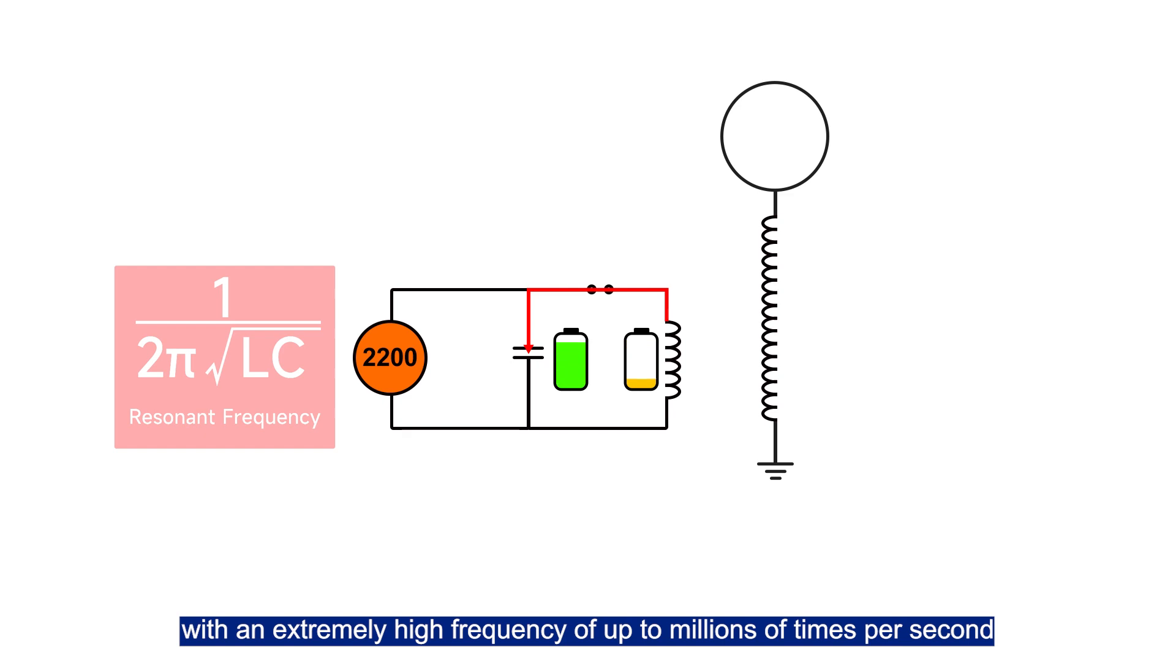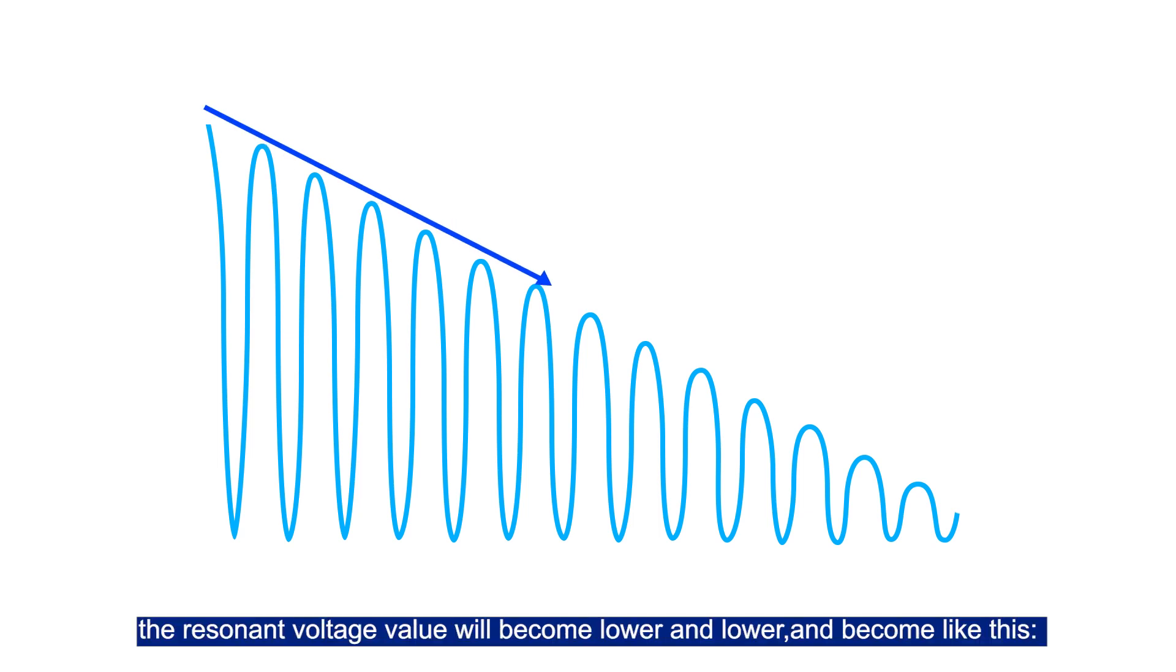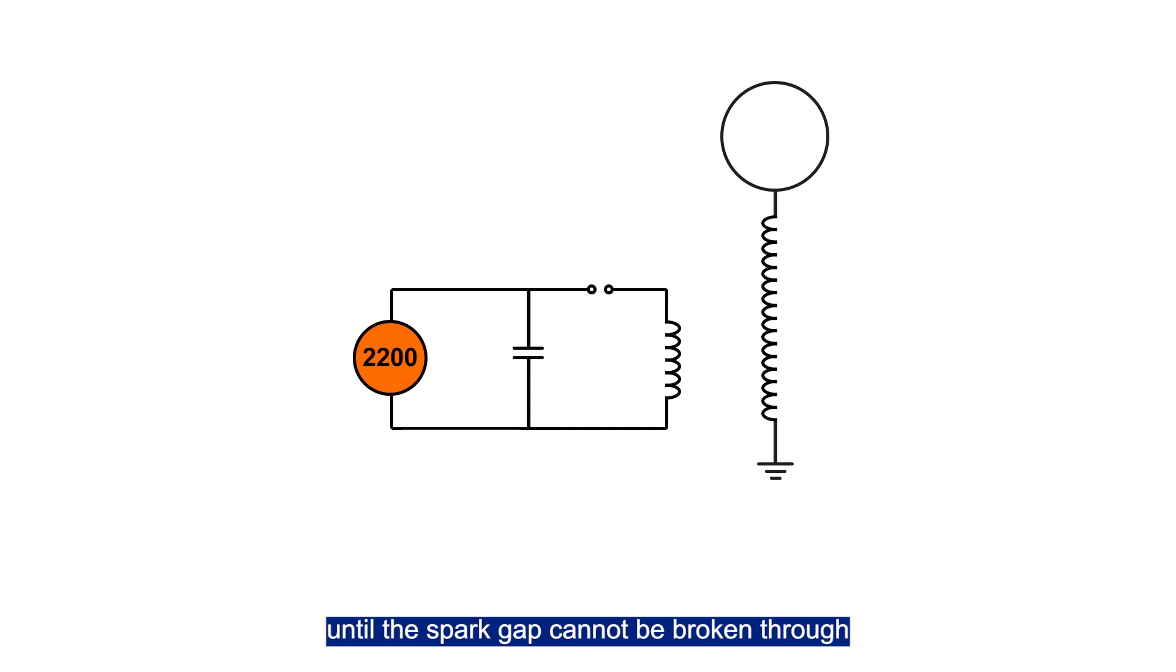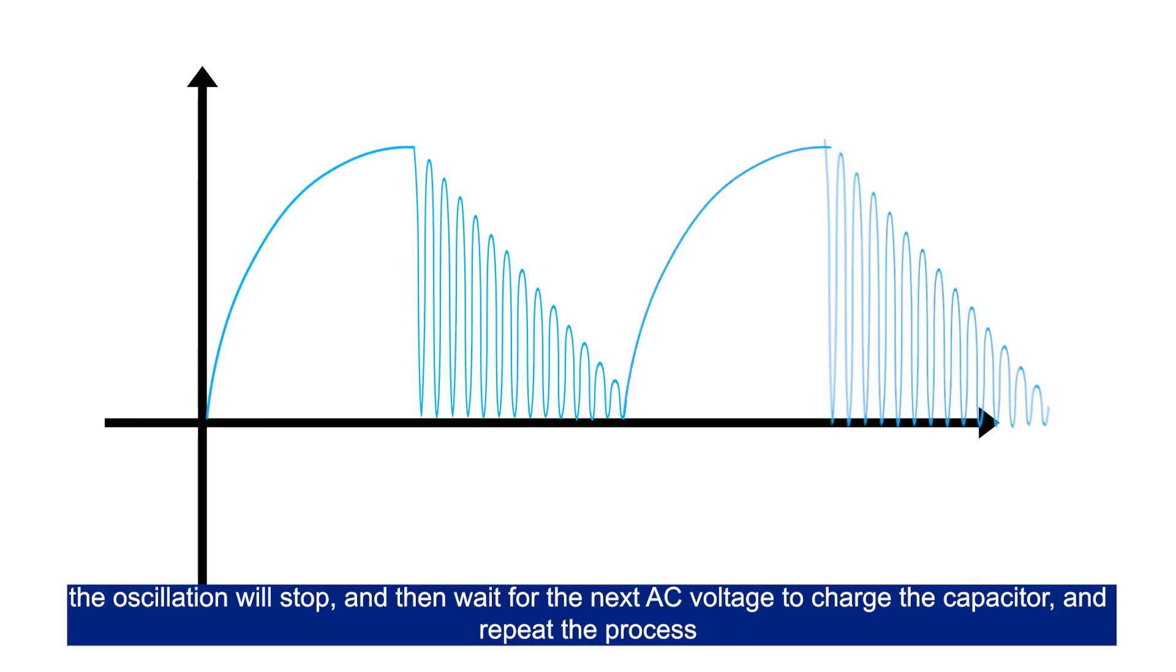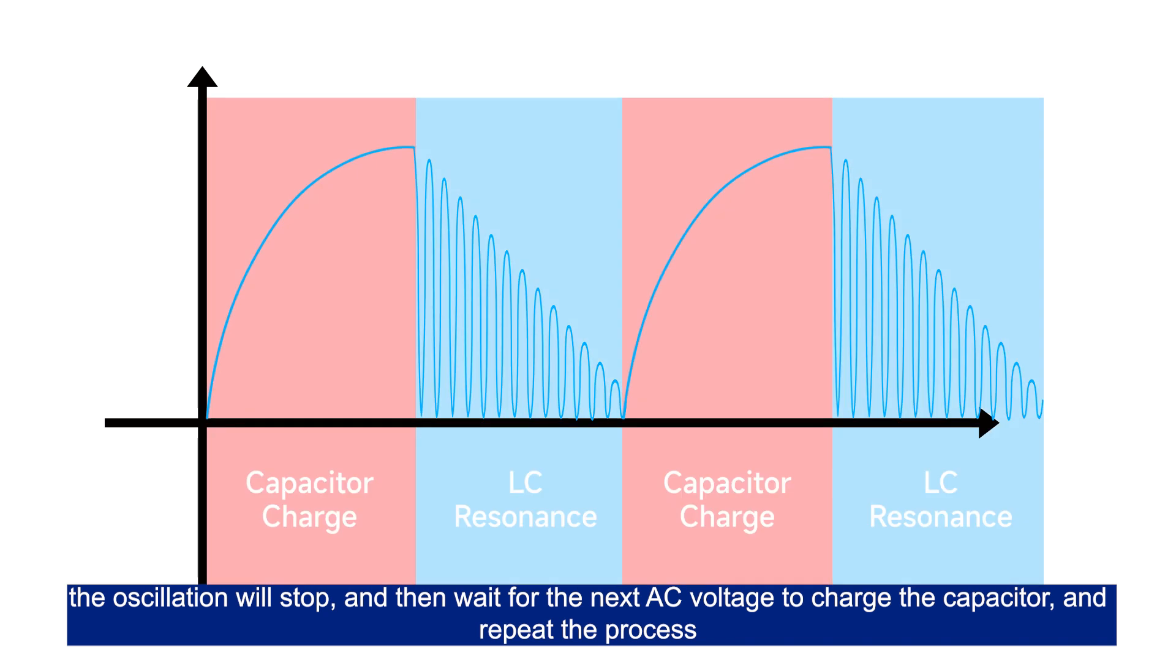With an extremely high frequency of up to millions of times per second, since the resonant circuit has a certain resistance, the resonant voltage value will become lower and lower and become like this, until the spark gap cannot be broken through. The oscillation will stop and then wait for the next AC voltage to charge the capacitor and repeat the process.